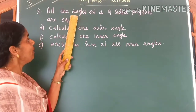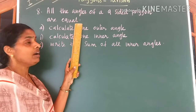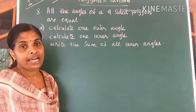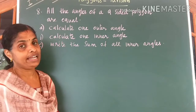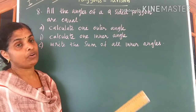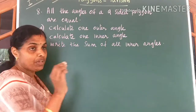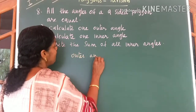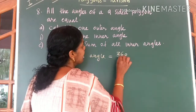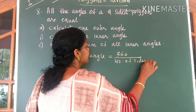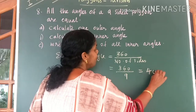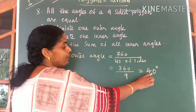Look at the next question. All the angles of a nine-sided polygon are equal. First question: calculate one outer angle. The sum of outer angles of a polygon is 360 degrees. We know the number of sides equals 9. Each outer angle is equal to 360 divided by the number of sides, that is, 360 divided by 9, which is equal to 40 degrees.